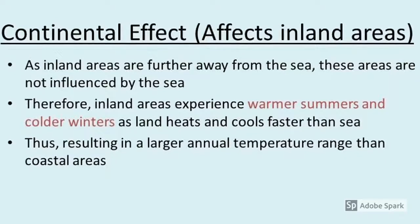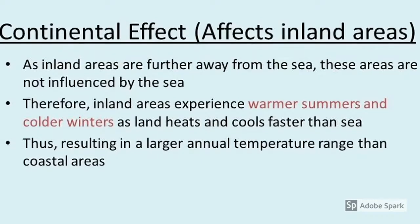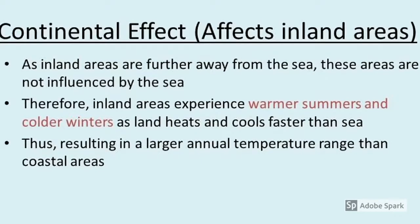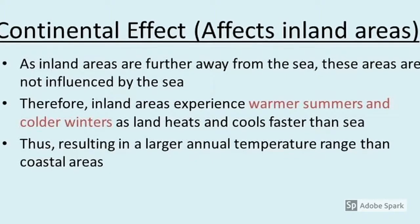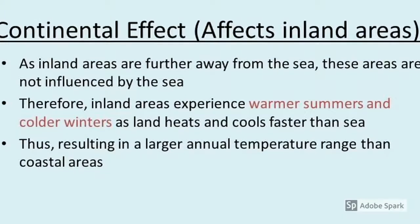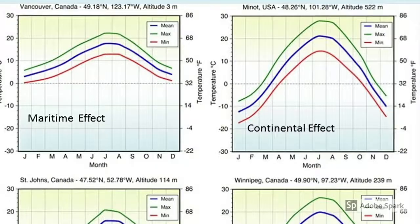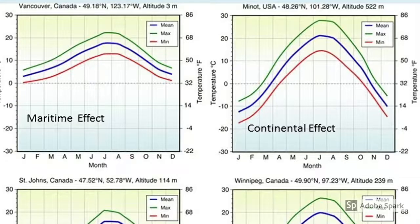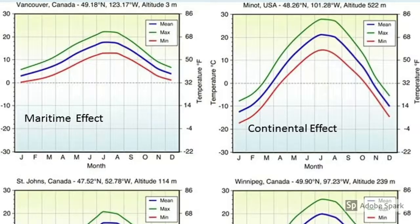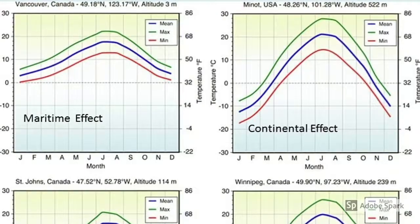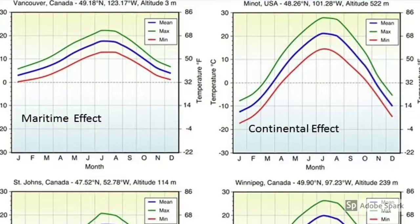Because there is no buffer created by the air currents above the sea, continental inland areas can have very cold winters and very hot summers. Typical examples include cities like Beijing. Looking at Vancouver versus Minot in the US, the temperature range without the water surface buffering can reach almost 20 degrees difference, whereas Vancouver's difference is about 10 degrees maximum.